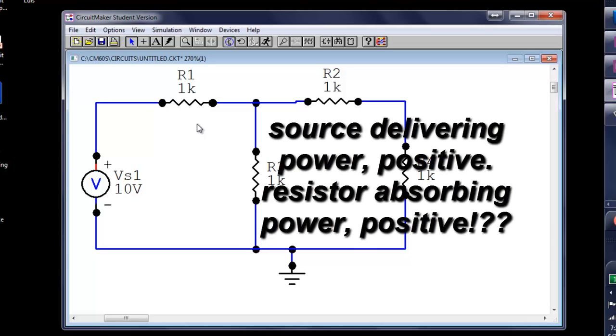When the source is delivering power, Circuit Maker reports that power as positive. But when it's a passive element, the one that's absorbing power, Circuit Maker reports that power as positive, too. So, a positive rating for power in Circuit Maker means different things for different elements. And that is a bit confusing.